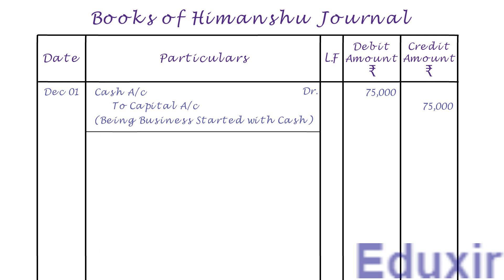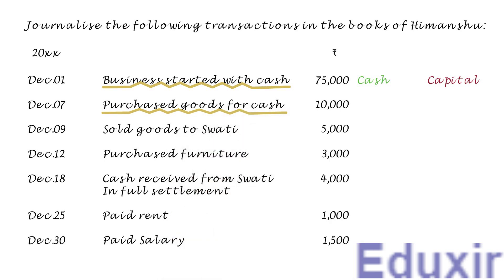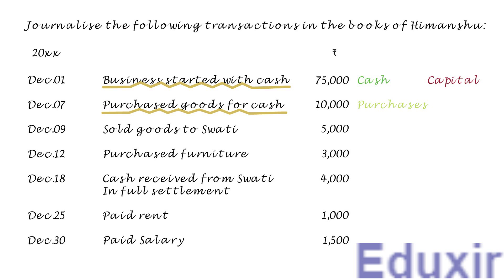Let us now take up the next transaction. In this transaction, goods worth of 10,000 rupees are purchased. Now the purchase of goods falls under revenue expenses. In other words, the business is incurring an expense in this case. The rule to record an expense incurred is to debit the corresponding expenses account. In this case, the purchases account should be debited. At the same time, as these purchases are done by paying in cash, the cash asset of the business will be decreasing. The rule to record any decrease in the asset is to credit the corresponding assets account. In this case, the cash account should be credited. With this analysis at our disposal, let us proceed with the journalizing of this transaction.